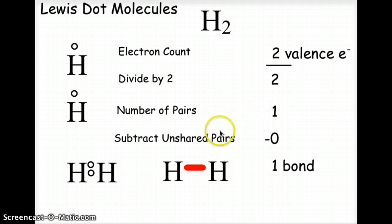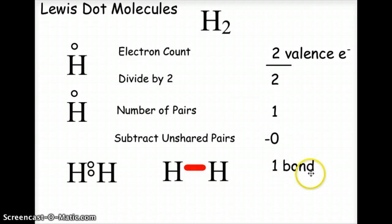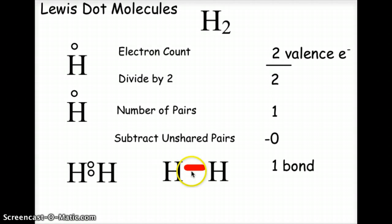The next thing we look for is what are called the unshared pairs. With hydrogen, because there's only one electron available on each atom, there are no pairs at all — so there won't be any unshared pairs. Subtracting zero tells us we're going to need one bond. The two hydrogen atoms will move close enough together that they share that pair in the middle, which creates a single bond. This line represents the two electrons being shared between the two hydrogen atoms — this is the Lewis dot structure for H2.